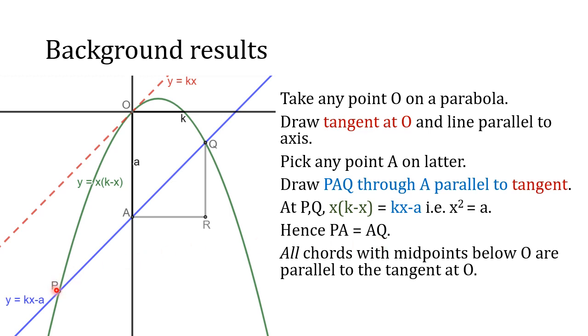Moreover, any chord which has its midpoint directly beneath O will be a chord like PQ which was drawn parallel to the tangent at O. If you think about any other chord emanating from P that has its midpoint on the line OA on the y-axis, the other end would have to be directly beneath Q or above Q, and there are no other points on the parabola on the same x-coordinate as Q.